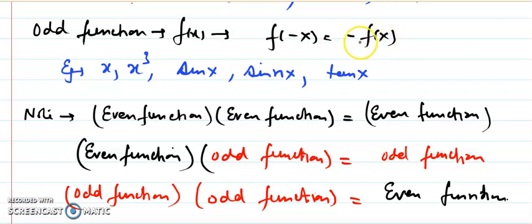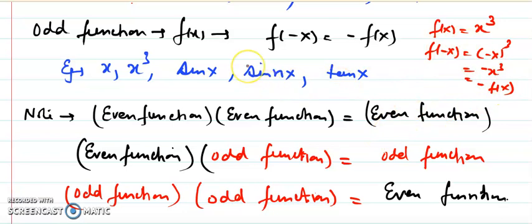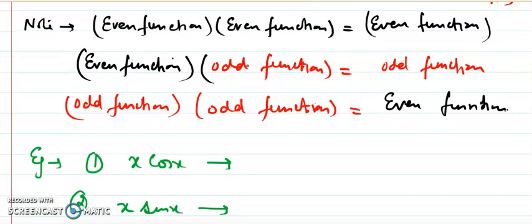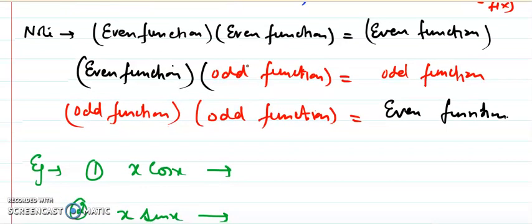An odd function is defined such that f(-x) = -f(x). So the value of f(-x) and f(x) are equal in magnitude but opposite in sign. For example, if f(x) = x³, then f(-x) = (-x)³ = -x³, which is the function with the opposite sign, so it is an odd function.